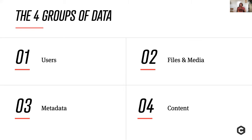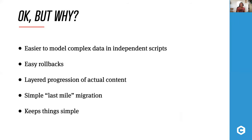Looking at all of this, we can identify four different groups of data. The first group is users — even complex systems mostly have a rather simple structure for users. Then files and media, which are the base for all content. Then metadata — everything not directly presented to the user in itself, but always presented as part of content. And finally the actual content nodes.